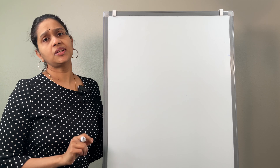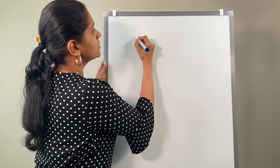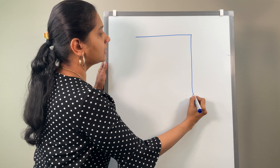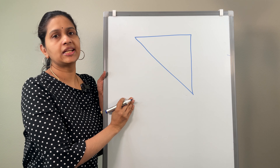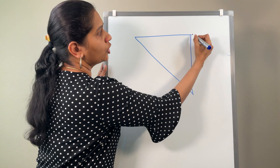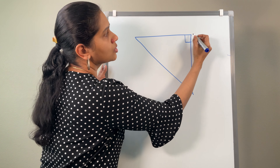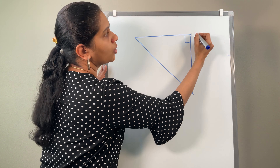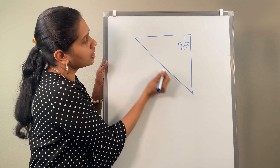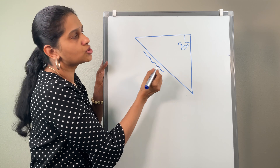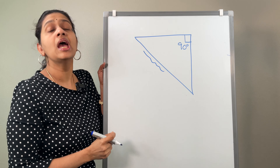Now consider another type of right triangle. Suppose you are going to draw the right triangle upside down. You know this small box — this is going to be 90 degrees. So which is the hypotenuse now? The side opposite to the 90 degrees, the longest side — this is going to be the hypotenuse, and these two sides are going to be the legs.